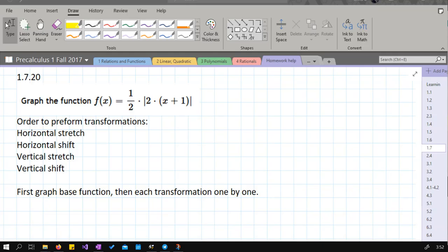So now we're gonna graph the absolute value function with four transformations. Let's go ahead and pull the transformations out one by one.